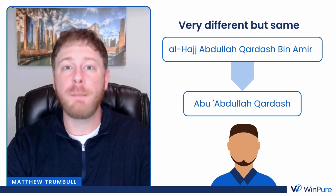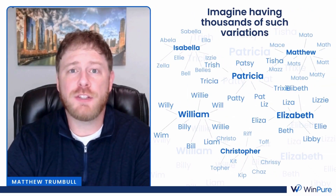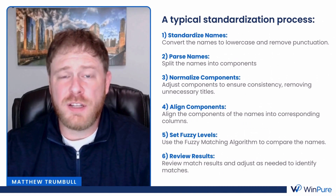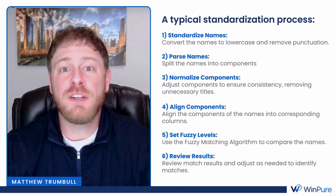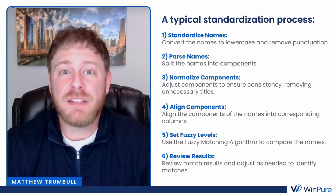Now imagine having thousands of these variations across your data set. As you can imagine, solving these fuzzy name issues using traditional tools such as Excel and data matching tools no longer cuts it.